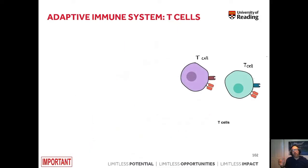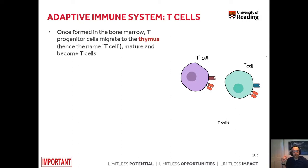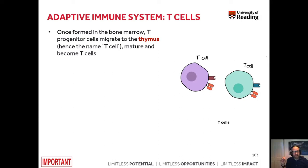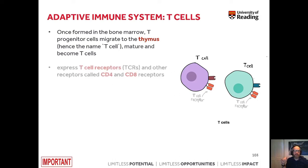So how do our T cells look and where are they actually produced? Similar to B cells, T cells are also formed in the bone marrow. However, they don't mature in the bone marrow. T progenitor cells — very early T cells — migrate to the thymus, hence the name T cell. They mature in the thymus and become fully differentiated T cells.